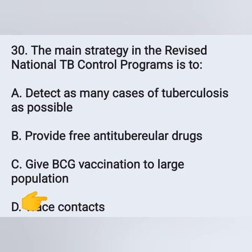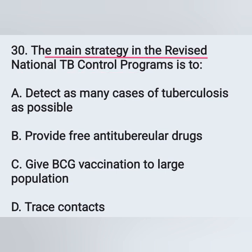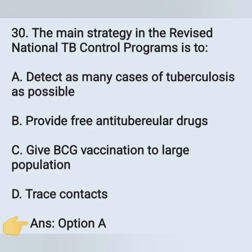Question 30: The main strategy in the Revised National TB Control Program is — options: option A, detect as many cases of tuberculosis as possible; option B, provide free anti-tubercular drugs; option C, give BCG vaccination to large population; option D, trace contacts. The correct answer is option A — detect as many cases of tuberculosis as early as possible.